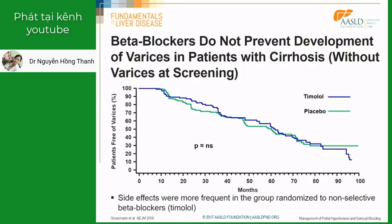In patients without varices, there is a randomized trial with over 200 patients and very long follow-up of over 10 years, comparing the use of a non-selective beta-blocker — in that case, timolol — with placebo, for the prevention of the development of varices. As you can see in this graph, timolol was not more effective than placebo in preventing the development of varices, and it was associated with a higher rate of side effects. Therefore, there is no role for beta-blockers in patients without varices.